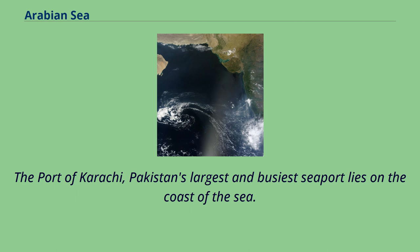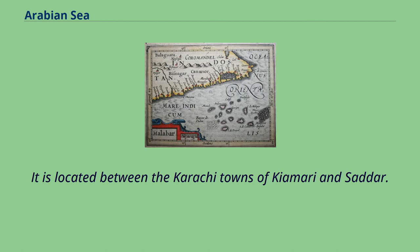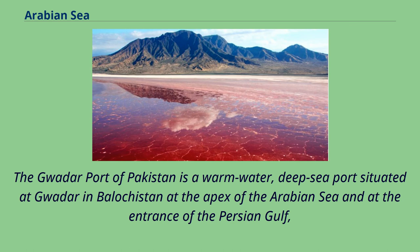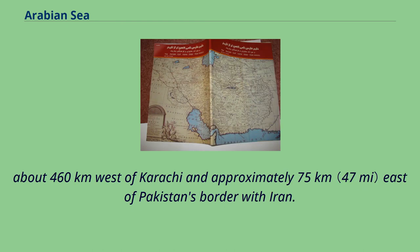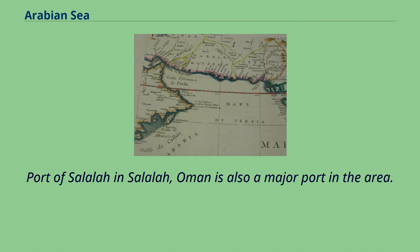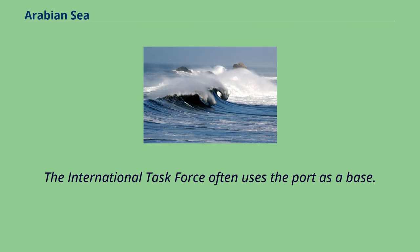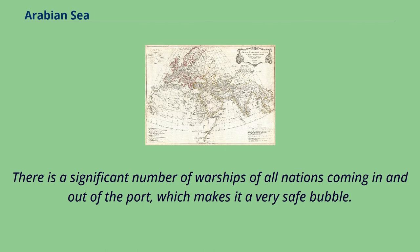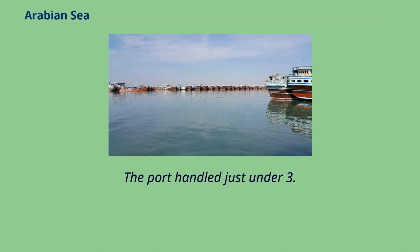The Port of Karachi, Pakistan's largest and busiest seaport, lies on the coast of the Arabian Sea, located between the Karachi towns of Kiamari and Sattav. The Gwadar Port of Pakistan is a warm-water, deep-sea port situated at Gwadar in Balochistan at the apex of the Arabian Sea and at the entrance of the Persian Gulf, about 460 km west of Karachi and approximately 75 km east of Pakistan's border with Iran. The port is located on the eastern bay of a natural hammerhead-shaped peninsula jutting into the Arabian Sea. The Port of Salalah in Oman is also a major port in the area; it is used as a base by international task forces and handled just under 3.5 million TEU in 2009.